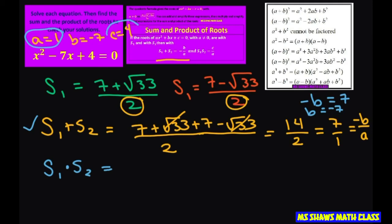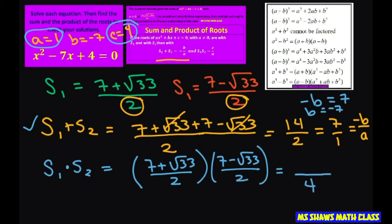us our c part, the 4. So we multiply these out: (7 + √33) / 2 times (7 - √33) / 2. For the denominator, that's just going to be 4. For the numerator, I'm going to use the difference of squares, so you're just